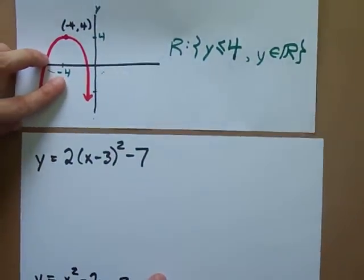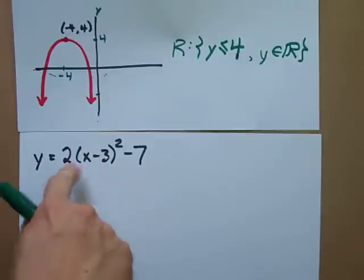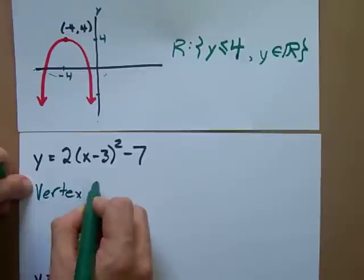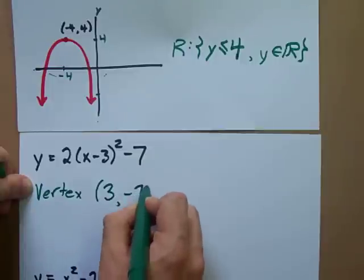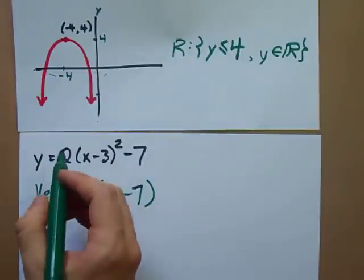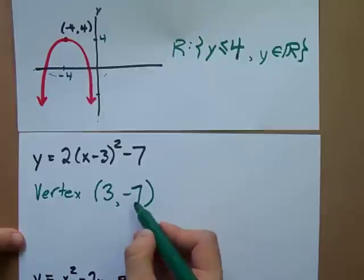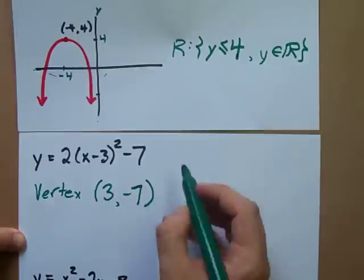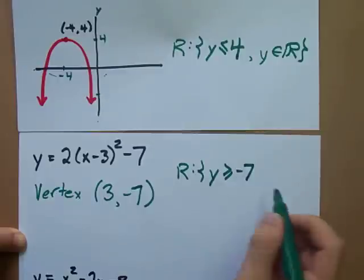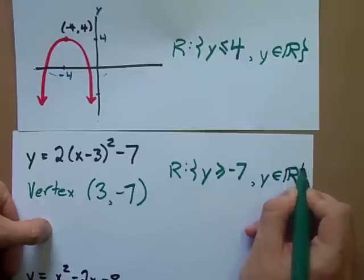Keeping that in mind, what about the range of this function? This parabola, written in vertex form, has a vertex at positive 3 and negative 7 — remember to flip the sign. It opens up because there's no negative out in front, so this is a minimum. That means y has to be greater than or equal to negative 7, and of course y must be a real number.